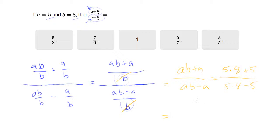So this is going to equal 40 plus 5 over 40 minus 5, which is 45 over 35. And these are both divisible by 5, so let's divide that out - this will be 9 over 7.